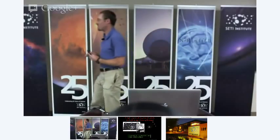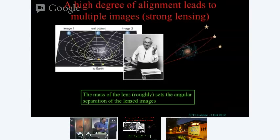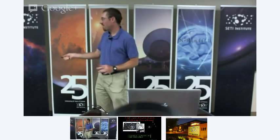This is Fritz Zwicky, a famous astronomer. He was one of the first people to postulate dark matter by looking at the motions of galaxies in massive clusters. But he was also extremely ahead of his time in predicting you'd be able to observe this multiple imaging effect. Einstein realized you could have this effect, but when thinking about stars as the lensing object, the angular separation of the images would only be milli-arc seconds — unobservable with the technology of the time.